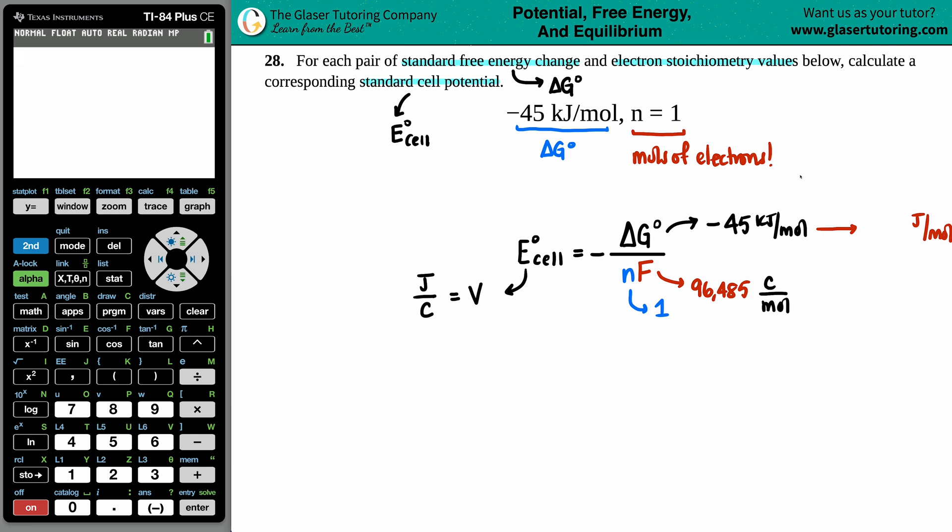Kilojoules to joules, that's pretty easy. All you got to do is just times by a thousand. Just take the decimal and move it over to the right. I still don't know my left from my right. 45,000, and that's a negative value.